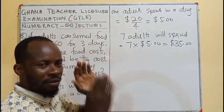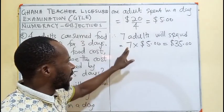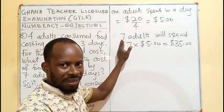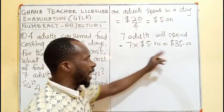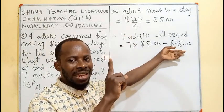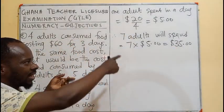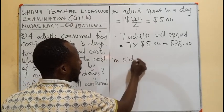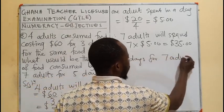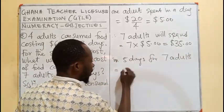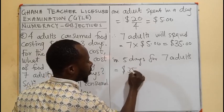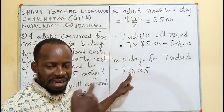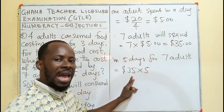All 7 of them in a day, since one person spends $5, 7 people spend $35. They are spending for 5 days, so: Day 1 $35, Day 2 $35, Day 3 $35, Day 4 $35, Day 5 $35. That means 35 groups of 5, or 5 groups of 35.